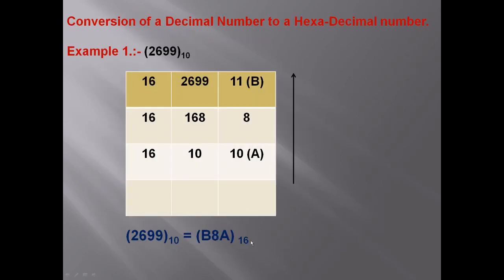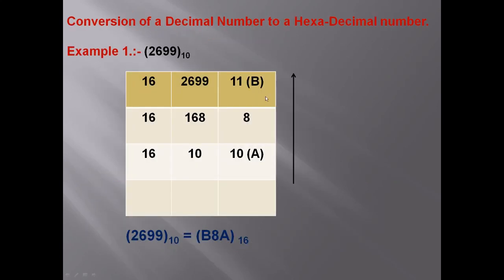Now we will do some questions based on the hexadecimal number system. First, I will explain the conversion of a decimal number to a hexadecimal number. Suppose we have taken the number 2699. Since the base is 10, this is a decimal number. First, we will make a table.